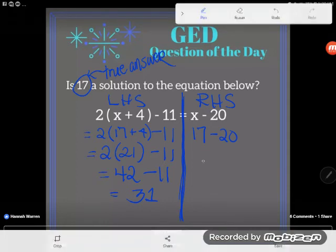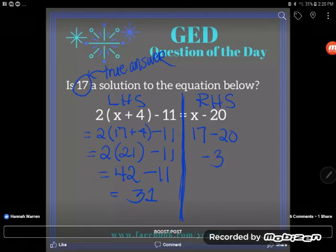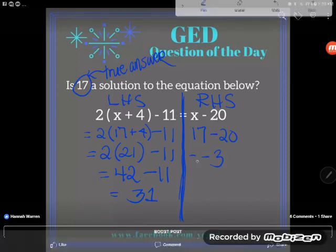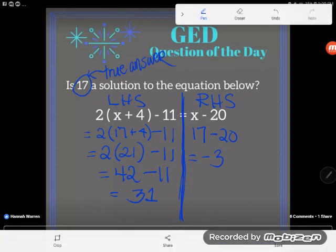Now on the right hand side, 17 minus 20—well, if I have only 17 dollars and I spend 20, I'll be in debt three dollars. So the left hand side came to 31, the right hand side came to negative 3.